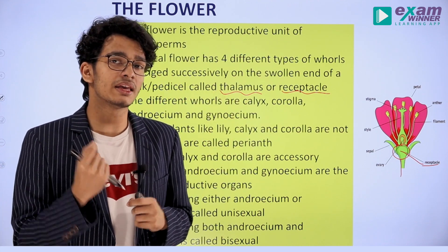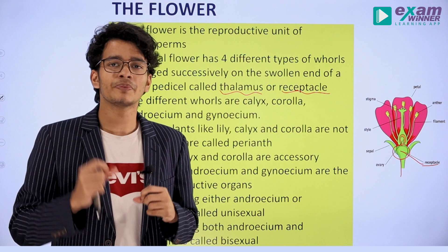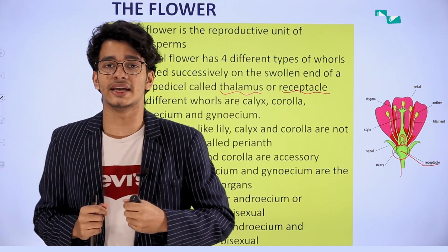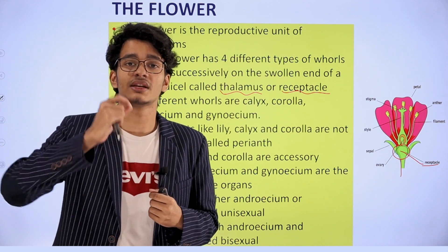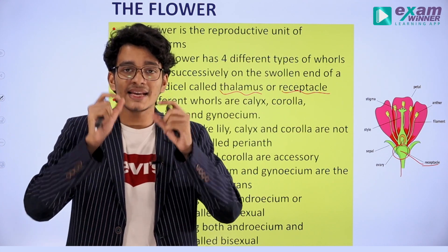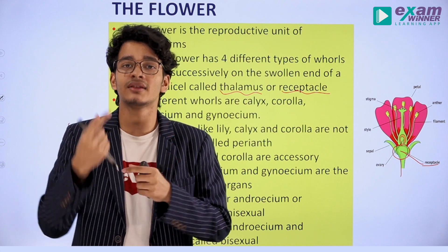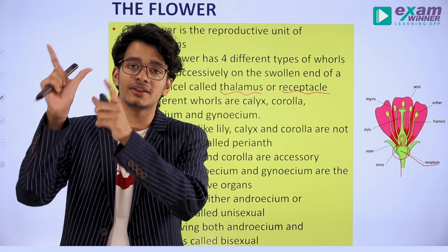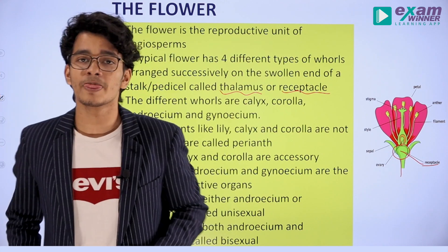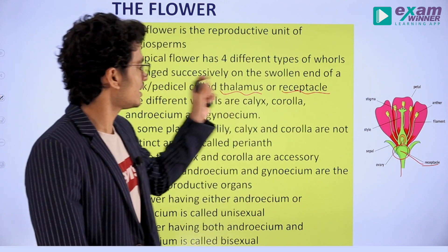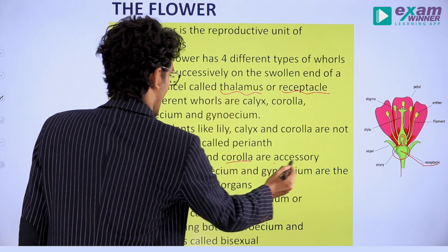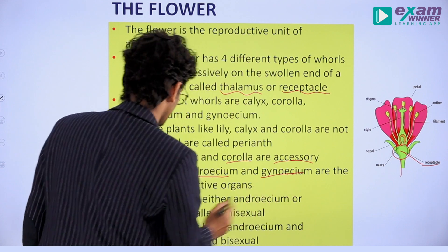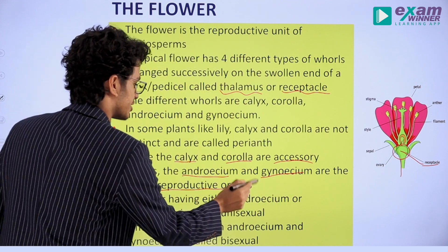These are the original reproductive structures, and we have an interaction producing fruit and seed. The Calyx and Corolla are accessory organs, while the Androecium and Gynoecium are the actual reproductive organs.